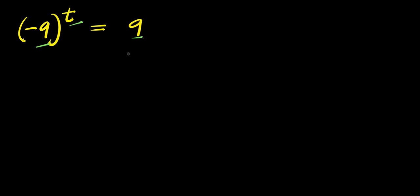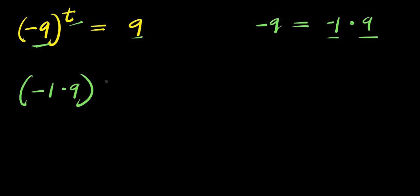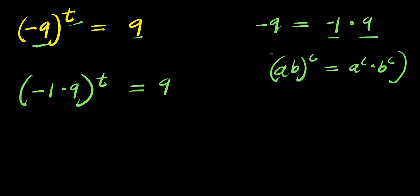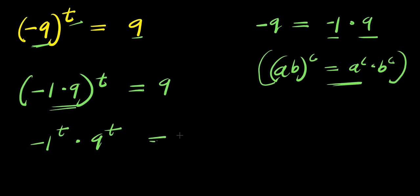In the first method, we are going to represent this negative 9 as a product of negative 1 times 9. So we have negative 1 times 9 raised to the power of t equals 9. Now we apply this identity: if you have (a times b) raised to the power of c, this equals a^c times b^c. Applying this identity, we have negative 1 to the power of t times 9 to the power of t equals 9.